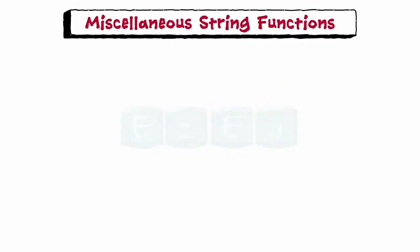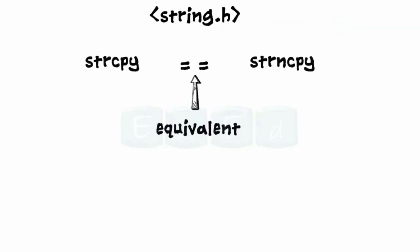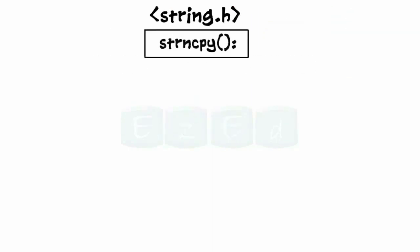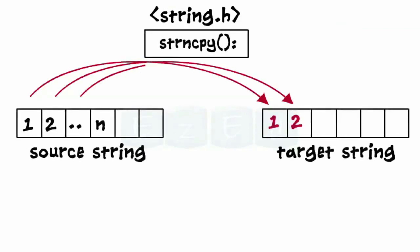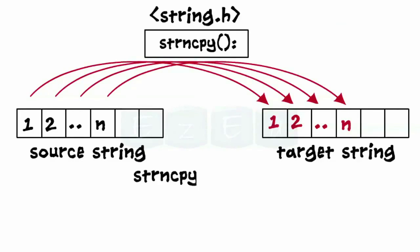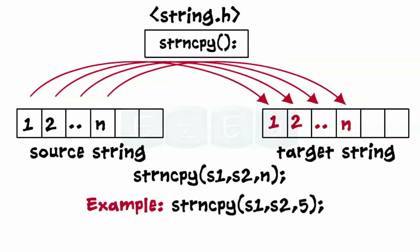Lastly, let's learn miscellaneous string functions. The header file string.h has many string manipulation functions. In addition to strcpy, strncpy copies only the first leftmost n characters of the source string to another target string. Here n specifies the number of characters to be copied — for example, this statement copies the first five characters from s2 to s1.